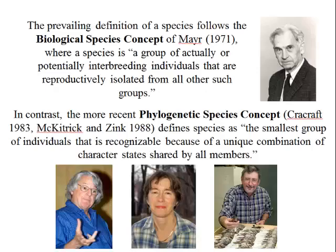There are two schools or concepts that prevail for the definition of species. The biological species concept is Ernst Mayr's — one of the fathers of evolutionary theory. He defines a species as a group of actually or potentially interbreeding individuals that are reproductively isolated from all other such groups. Reproductive isolation is the key. More recently, Joel Cracraft, Mary McCatrick, and Bob Zink came up with the phylogenetic species concept. They define a species as the smallest group of individuals recognizable because they share a unique combination of character states — the smallest group sharing everything, basically.